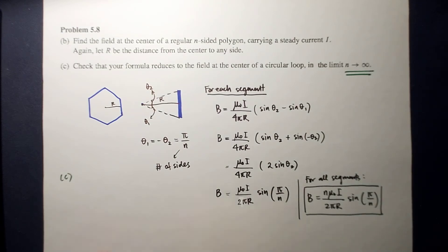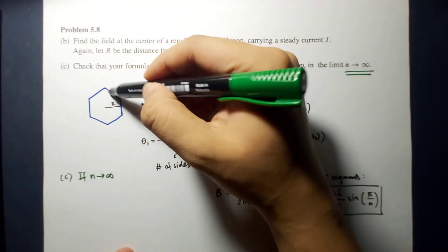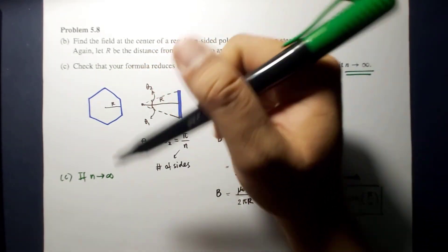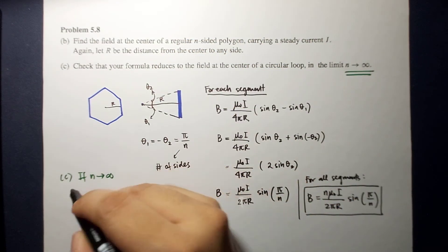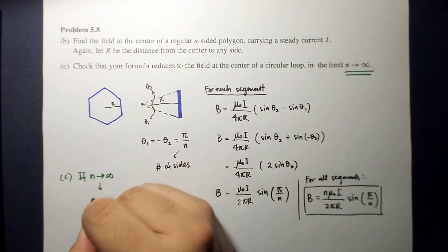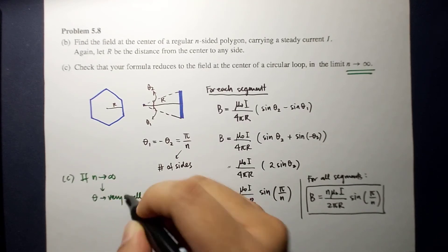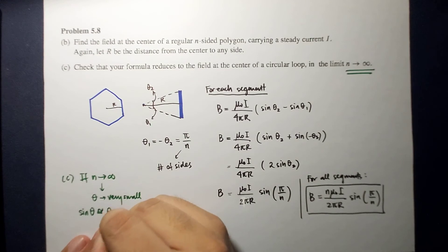So if n approaches infinity, so that means the segment becomes, this n-sided polygon becomes a circle. So that means as n approaches infinity, theta becomes very small. In fact, it's infinitesimally small that we can use this usual small angle approximation wherein sine theta is approximately equal to theta.